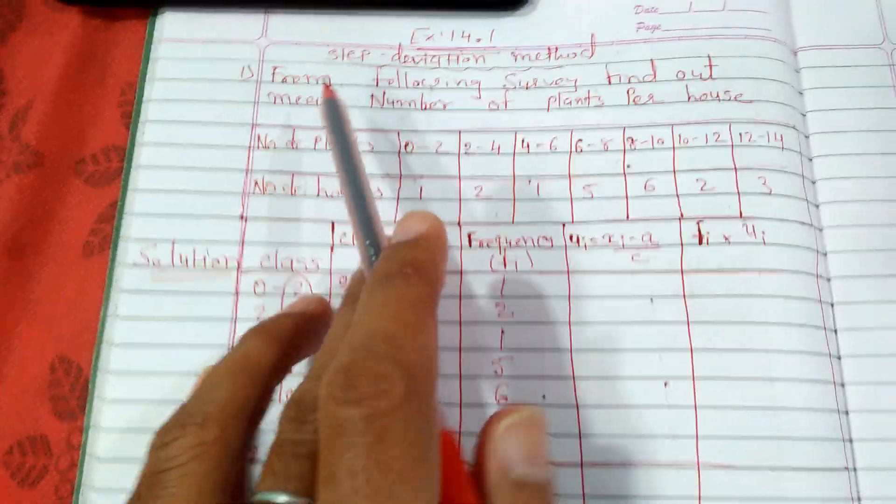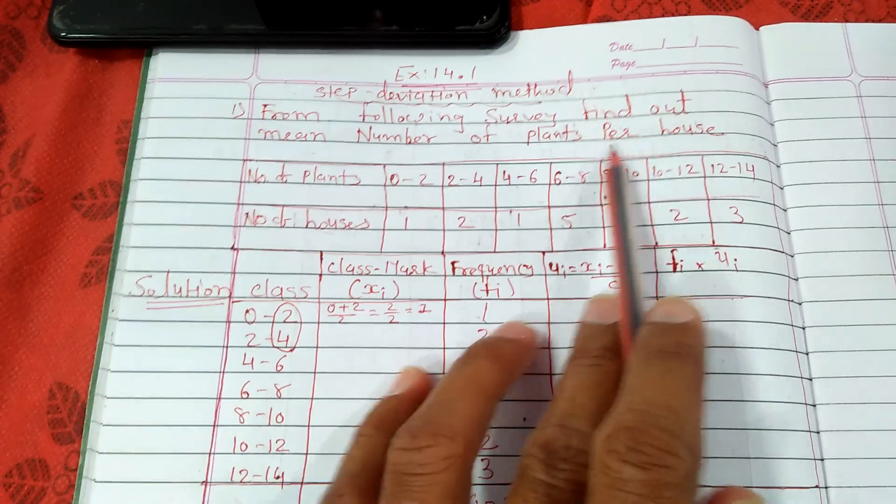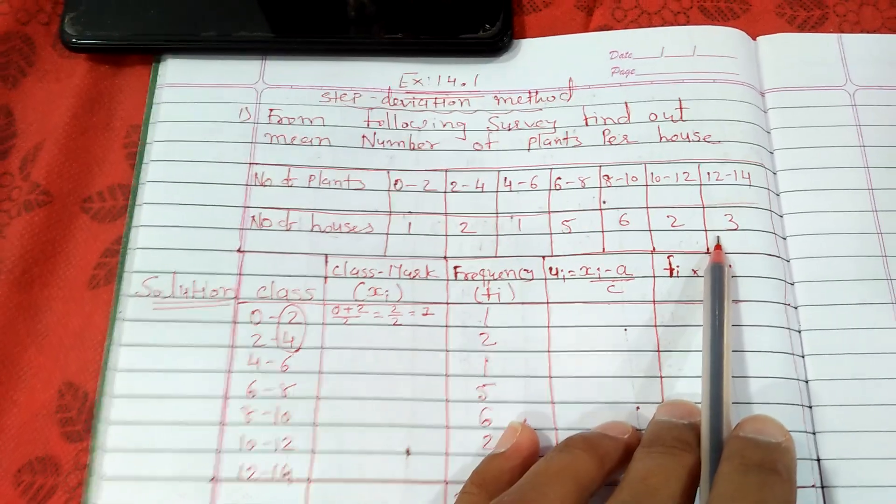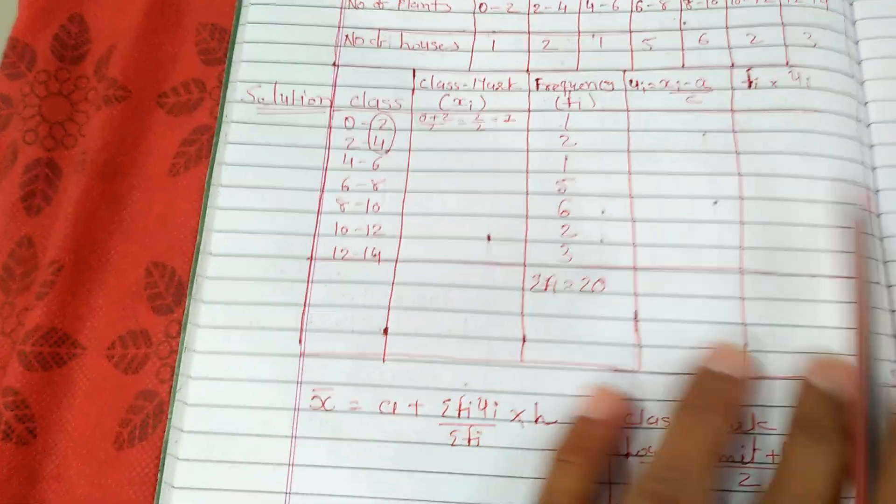Here is the question: from the following survey, find out the mean number of plants per house. Number of plants and number of houses are given. To solve this sum we will require five columns.